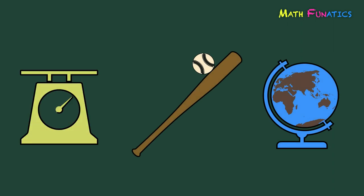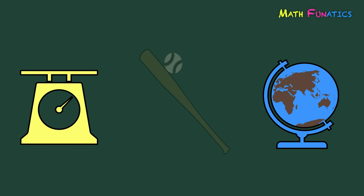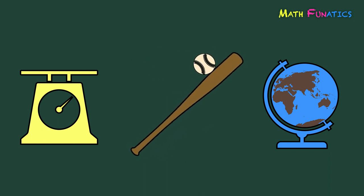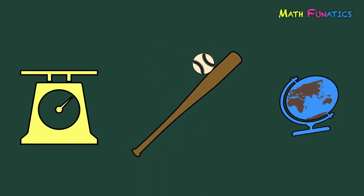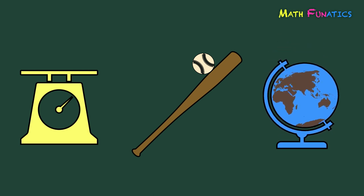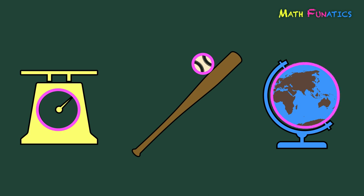The first drawing is a weighing scale. A baseball and a baseball bat are shown in our second illustration. And the last one is a globe. Notice that there is a circle in each illustration. The circle in the weighing scale is here. The baseball itself in our second illustration is circular in shape, as well as the globe in our third illustration.